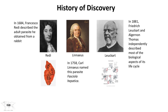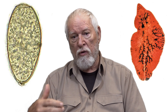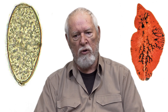Linnaeus picked up on the fact that this worm had been discovered and described, and gave it its official name of Fasciola hepatica. Sometime much later, Leuckart — the same person who did a lot of work on the Trichinella spiralis worm — worked out all of the details of the life cycle of Fasciola hepatica and became a champion for the control of this parasite throughout Europe.